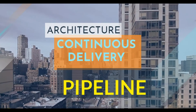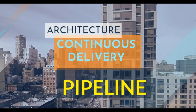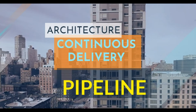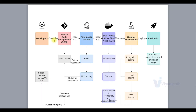Now we'll see the architecture of the Continuous Delivery pipeline and also the flow of execution for this entire project. So this is the design — first, the developer makes a code change. Once you have a Continuous Delivery pipeline set up, this entire process will execute automatically.